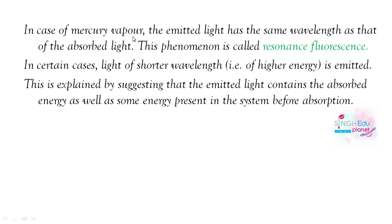Now, when we look at mercury vapor, the emitted light has the same wavelength as the absorbed light. So mercury vapor is a special case called resonance fluorescence — the type of fluorescence in which emitted light has the same wavelength as absorbed light. And in some cases, light of shorter wavelength is emitted, because the emitted light contains the absorbed energy as well as some energy already present in the system before absorption, so energy increases and wavelength decreases.